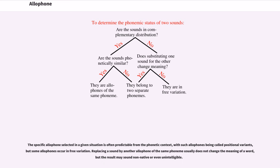The specific allophone selected in a given situation is often predictable from the phonetic context, with such allophones being called positional variants, but some allophones occur in free variation. Replacing a sound by another allophone of the same phoneme usually does not change the meaning of the word, but the result may sound non-native or even unintelligible.